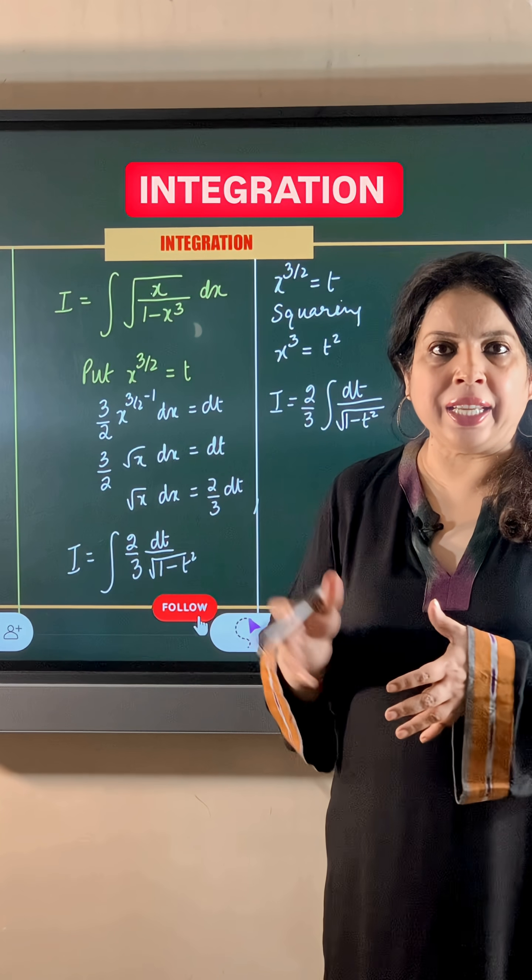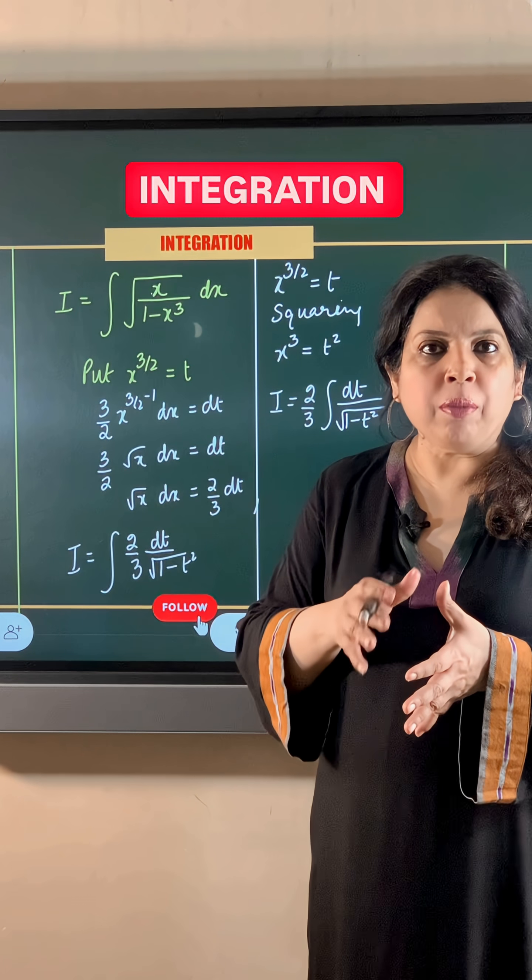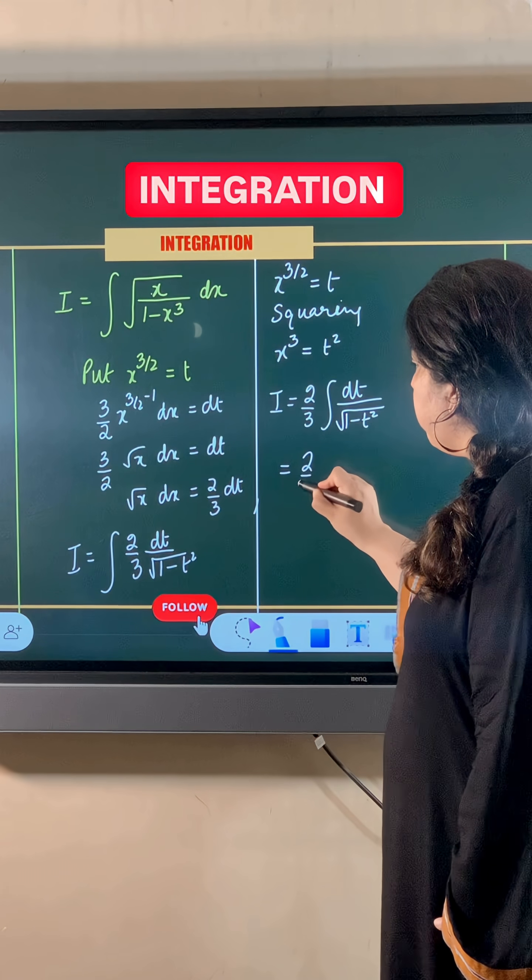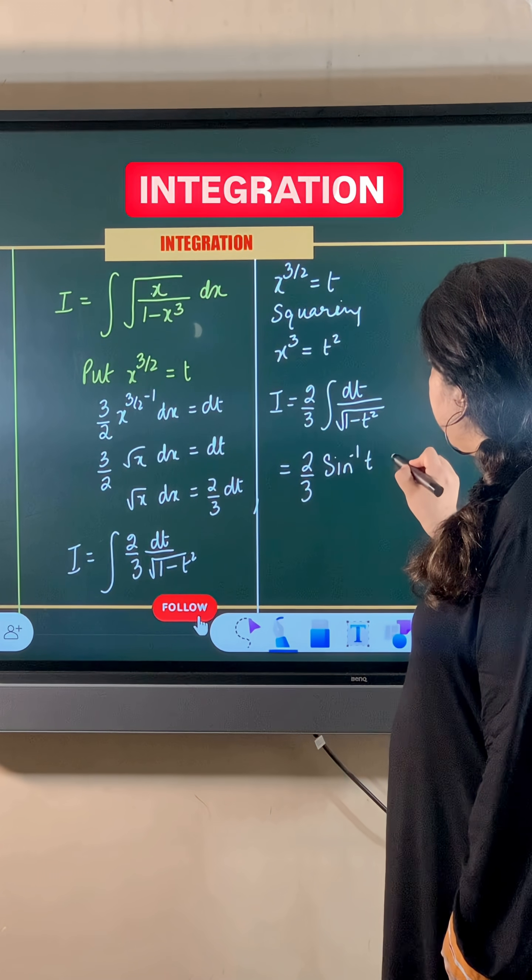derivative of sine inverse t is 1 upon root 1 minus t square. So integral of 1 upon root 1 minus t square is going to be sine inverse t. So this becomes 2 over 3 sine inverse t plus c.